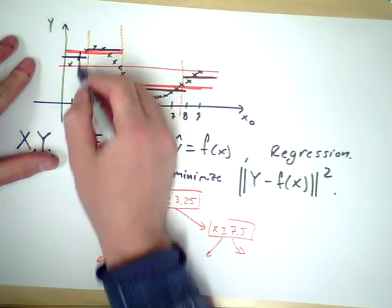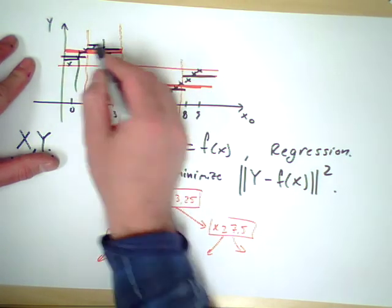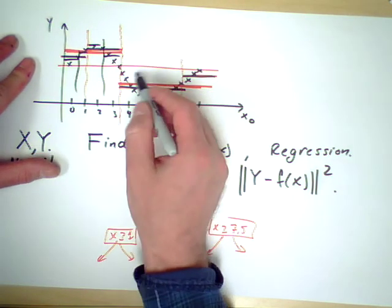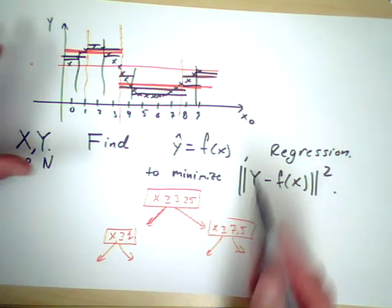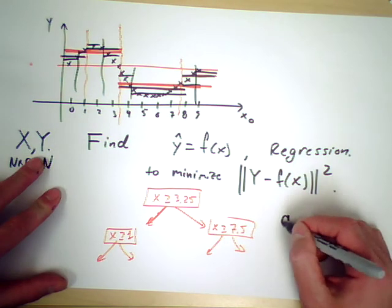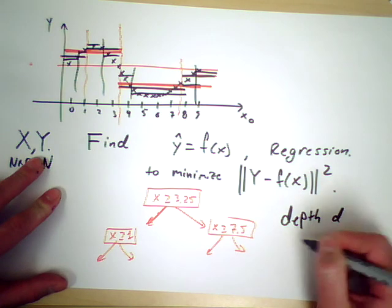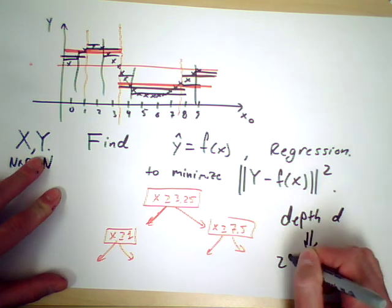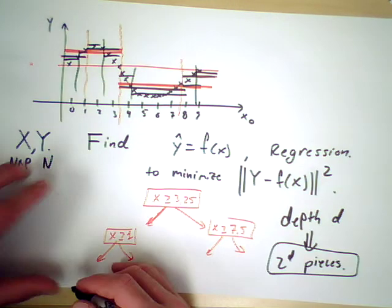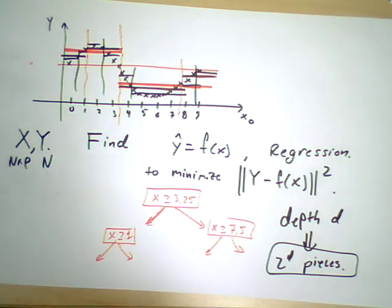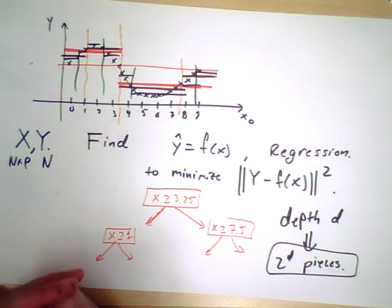Of course you can keep doing this: cut and draw there and there, cut and draw there and there, and keep cutting these regions into smaller and smaller pieces. In each sub-region taking an average, you end up with a tree of depth d, and we'll have 2^d pieces to our function. Obviously unlike a linear model or logistic regression model or any of the polynomial models, this model is in some sense never smooth.